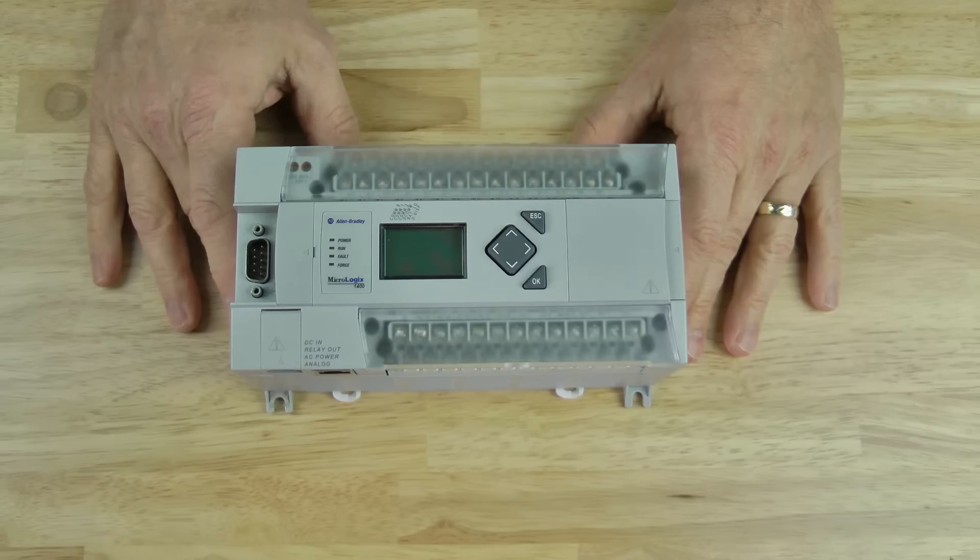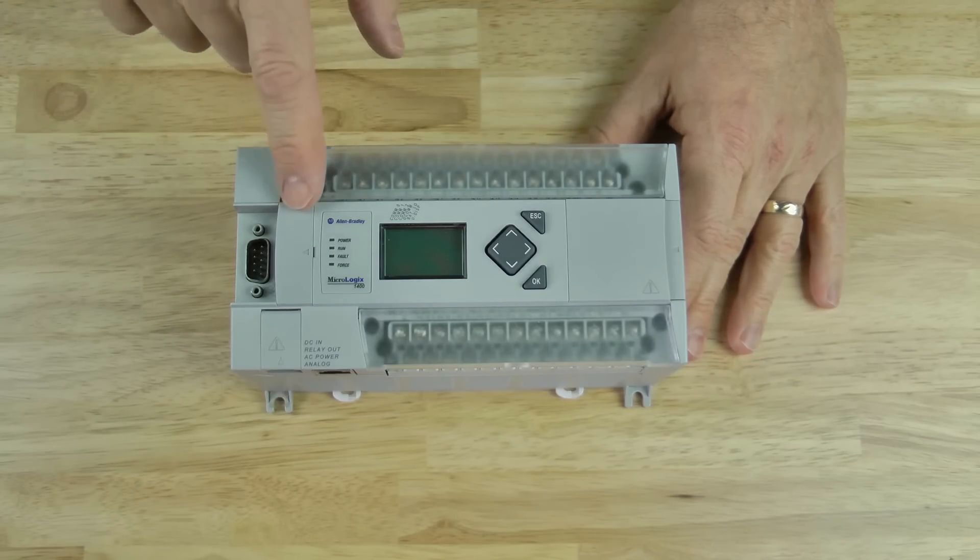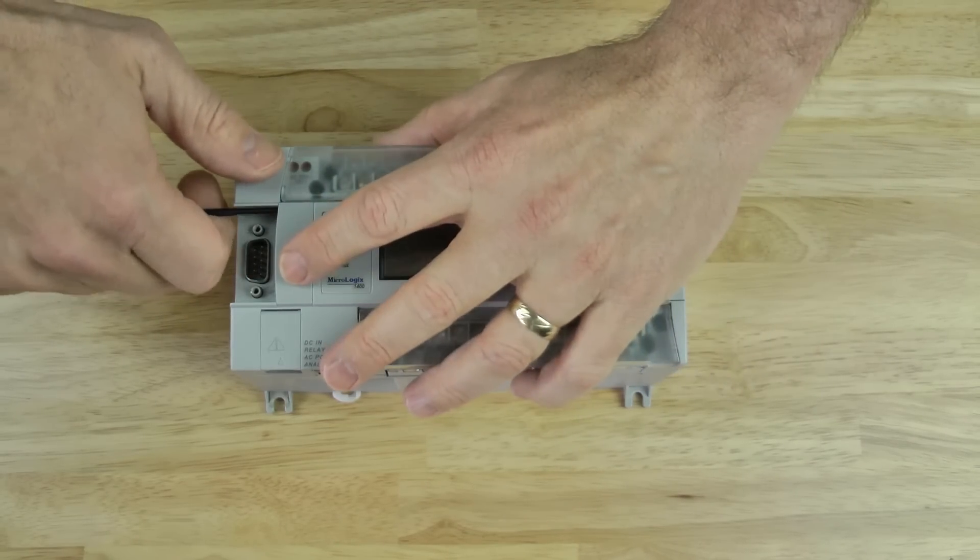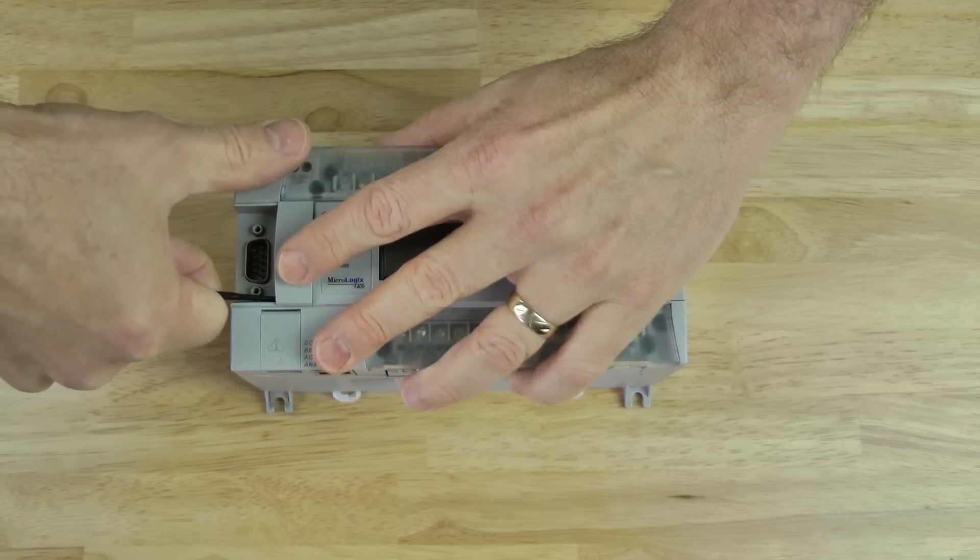To install the memory module, you'll first need to remove the memory module plug cover on the left-hand side. On new units, it's in there pretty tight, so I'll use this screwdriver to help pry it out.